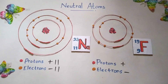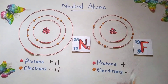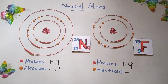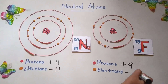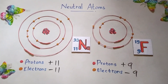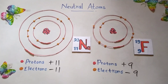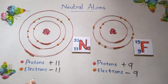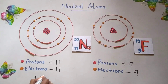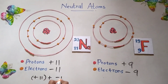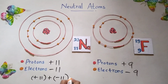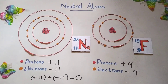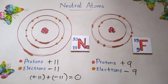Then if you take this chlorine atom, if you count the number of protons inside the nucleus, that will be 9, and the number of electrons will also be 9. So if you calculate the final charge, positive level plus negative level, that will be equal to 0. That means this atom finally has no charge.